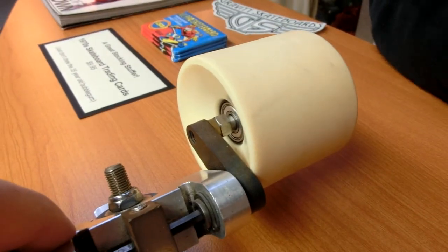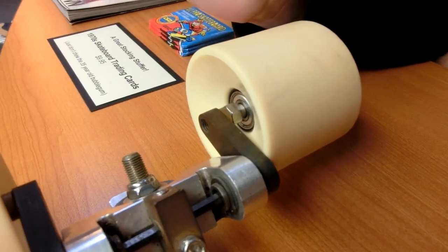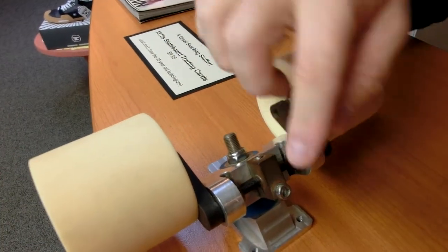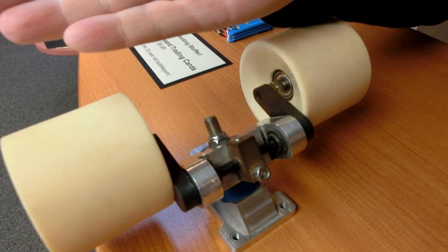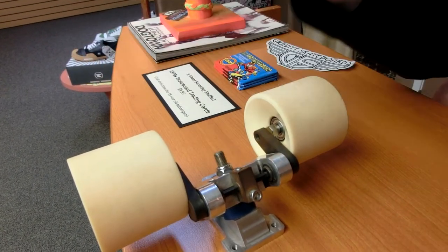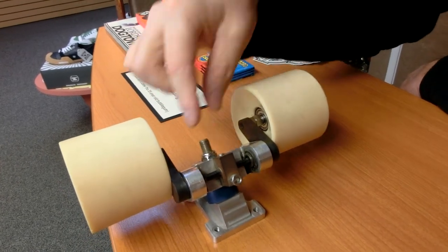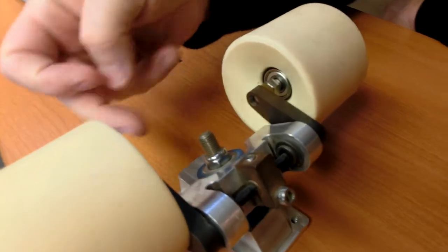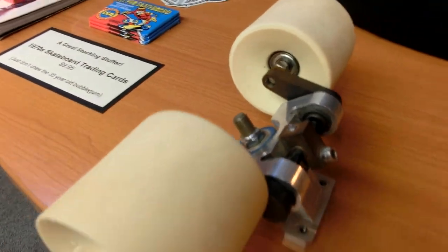You can adjust the spring load? You can adjust a couple things here. You can adjust how much travel you would like by loosening this Allen key, moving and pre-loading, basically, how much travel you would like. And then you can also adjust the turning of the truck with this nut on the kingpin here by adjusting the tension on the cushions.